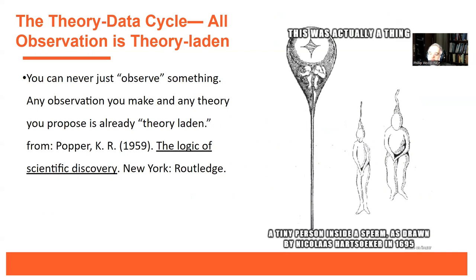What's wrong with just observing things? All observation is theory-laden. A striking example: with early powerful microscopes, scientists very reliably observed a tiny curled-up person inside a human sperm — the homunculus — and multiple observers confirmed it, drawing detailed diagrams. You look at things with an expectation already in place. When you observe, you are already seeing through a theoretical lens.